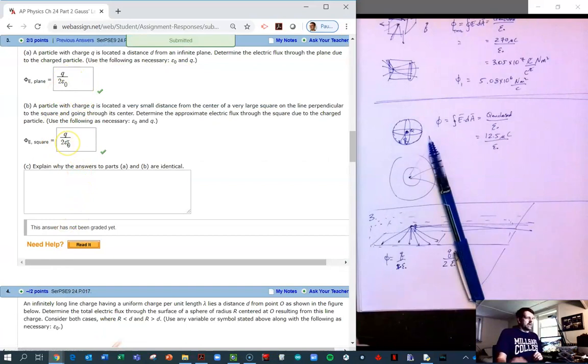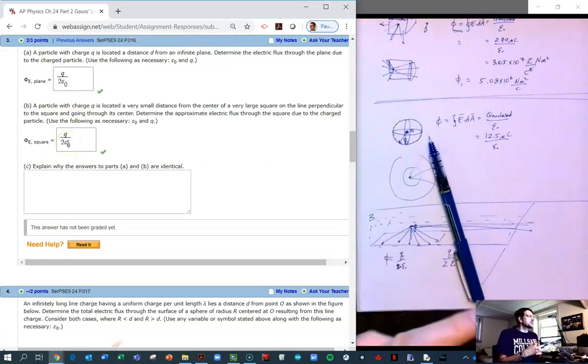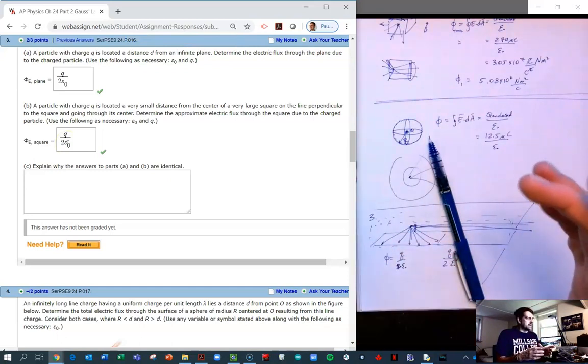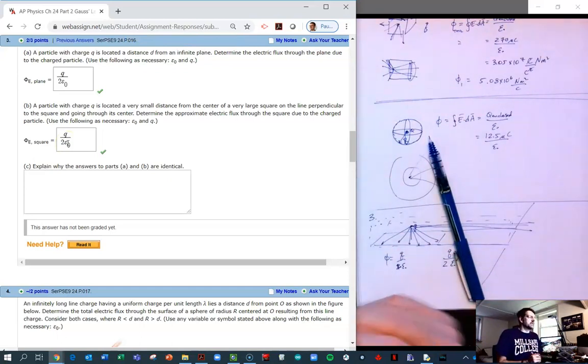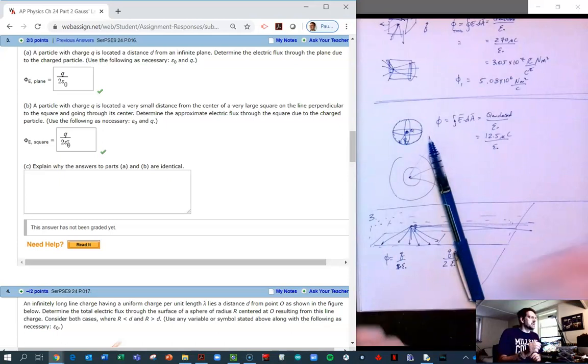And so to a small charge, say an electron or a proton or whatever, then a very large square, when you're close to a very large square, the square appears to be infinitely big.